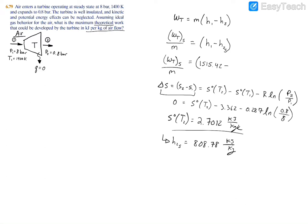Now we can just plug that back into our equation up here: 808.78. And if you plug this into your calculator, you'll have your final answer of 706.64 kilojoules per kilogram.